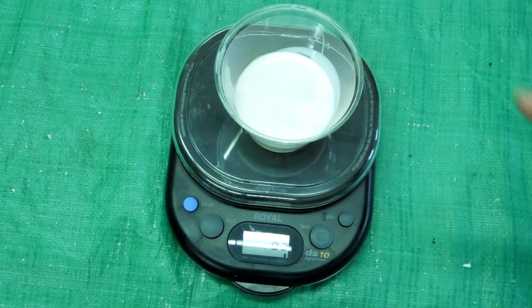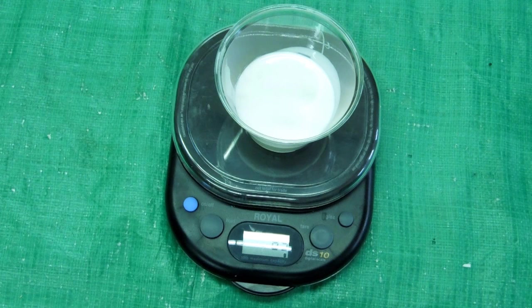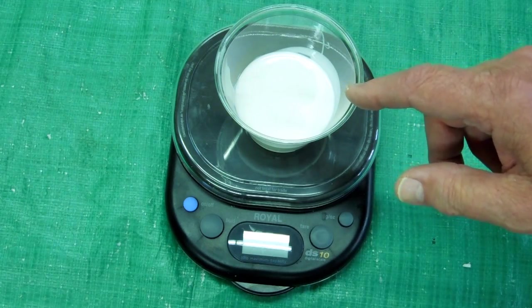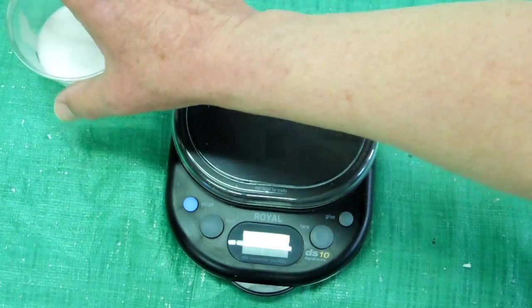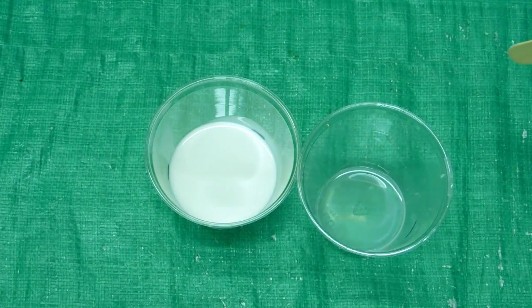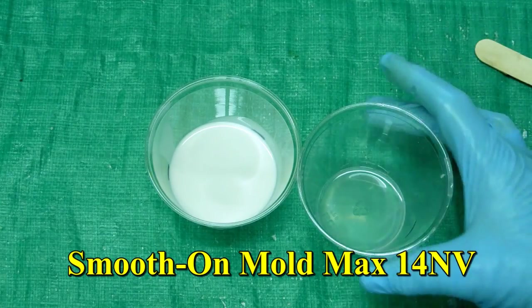Now this is mixed in a ratio of 100 parts of A, silicone, to 10 parts of B, catalyst, by weight. We have 90 grams of silicone. We're going to measure out 9 grams of catalyst. We have 90 grams of silicone and 9 grams of catalyst.